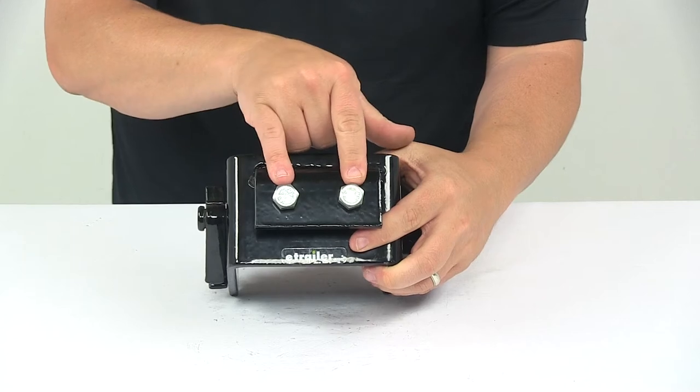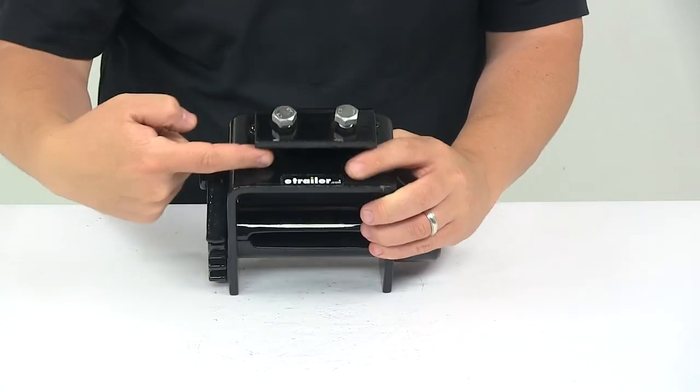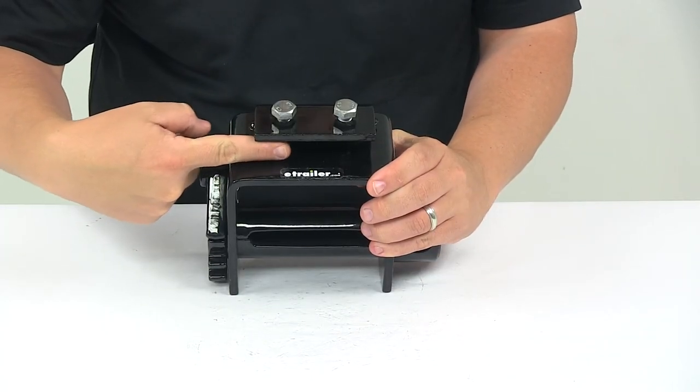The mount holes are separated on center by two inches. And the channel opening, that's the gap right here, is three quarters of an inch.